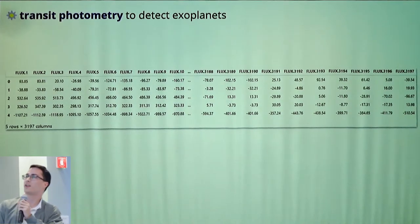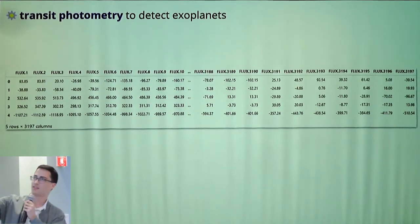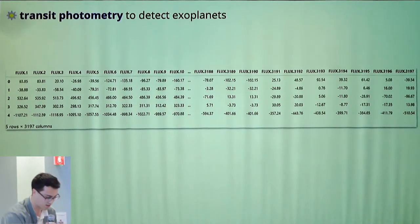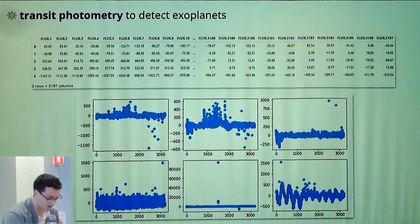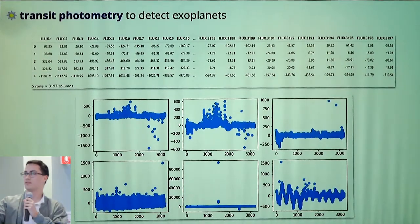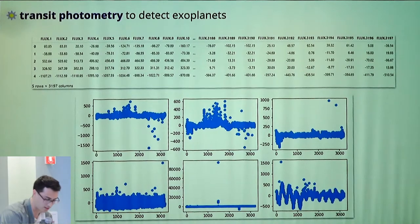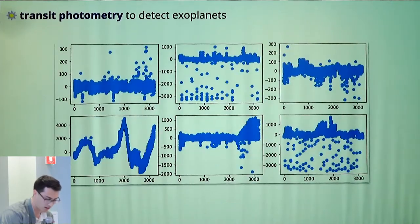The NASA Exoplanet Archive provides a lot of this time series data for the brightness levels of various stars at a given time. I took some of this data, did some Seaborn stuff to it. You can end up generating these time series plots and I'm kind of going through several of them now.